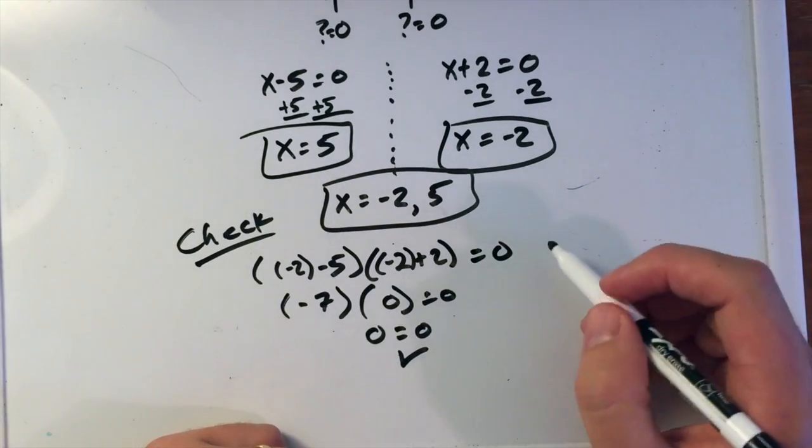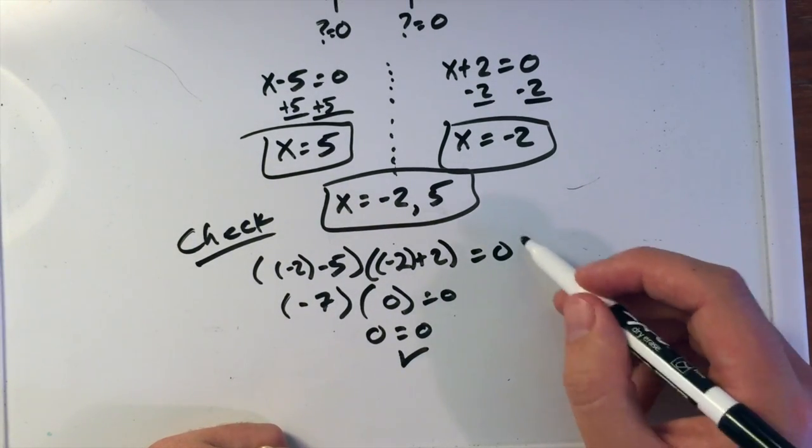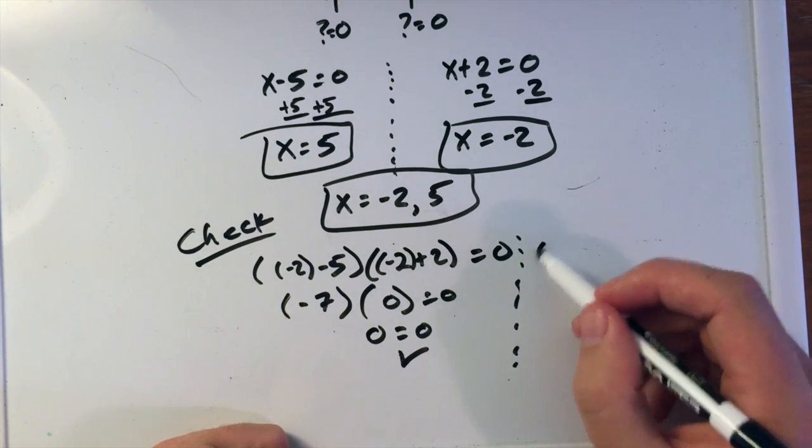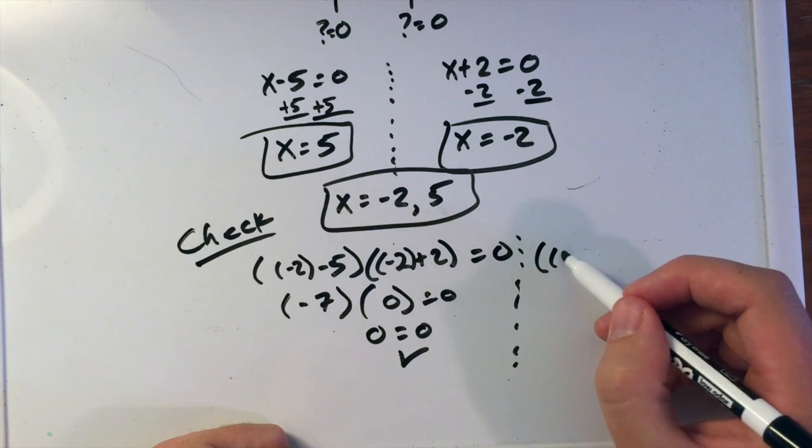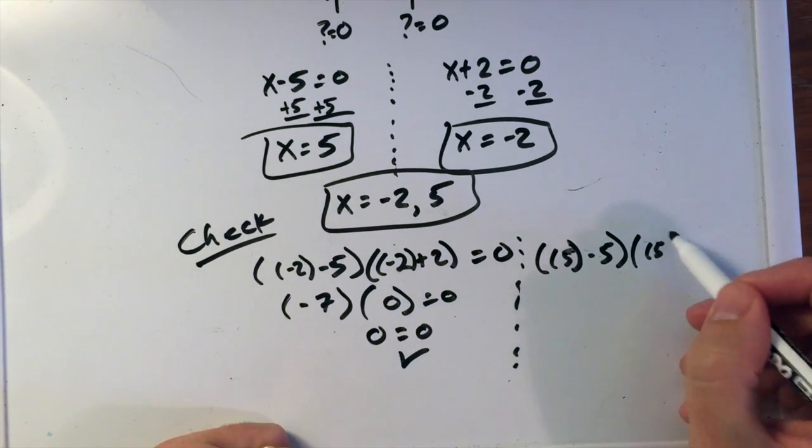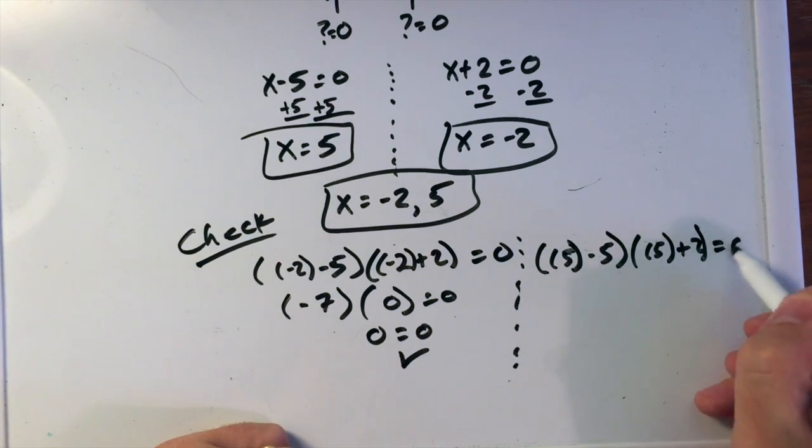And we can do the other one if you want to. It's the same idea, but let me just move a little line here. Our equation, we have, well, let's plug in (5)-5 times (5)+2, and that equals 0.